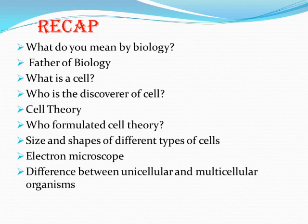We also discussed the electron microscope, which has magnified microscopic things nearly a thousand times. This electron microscope was discovered by Knoll and Ruska of Germany in 1932.